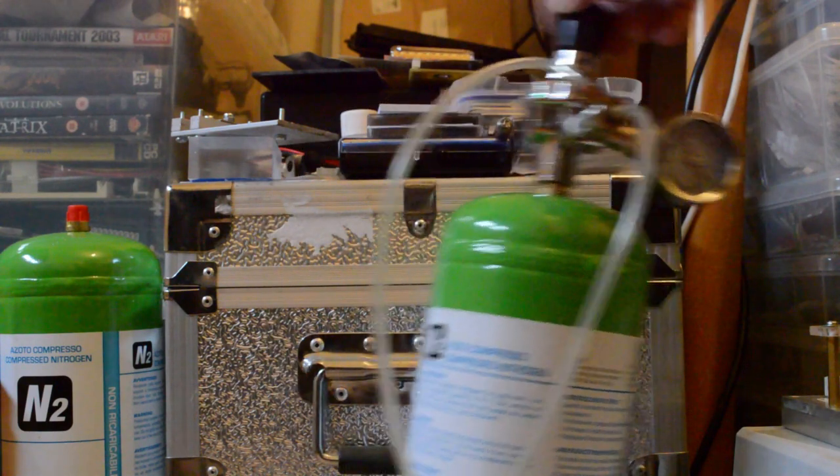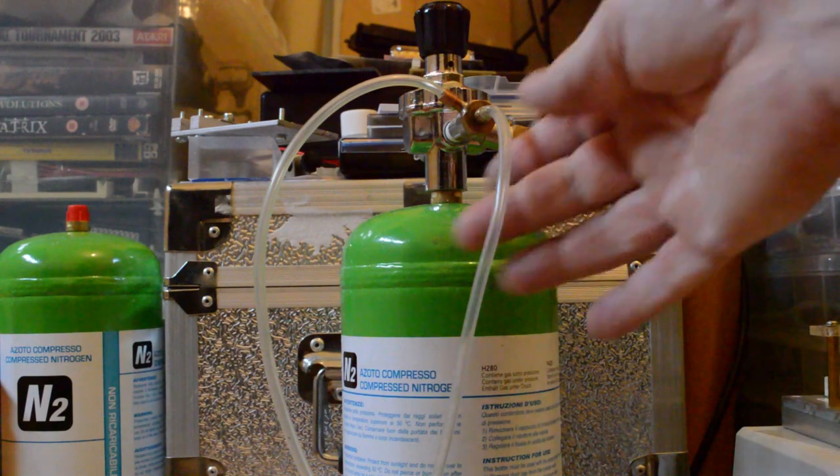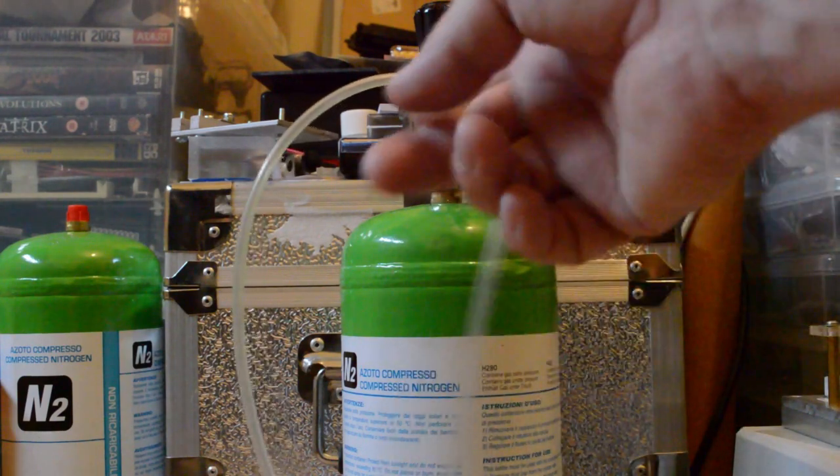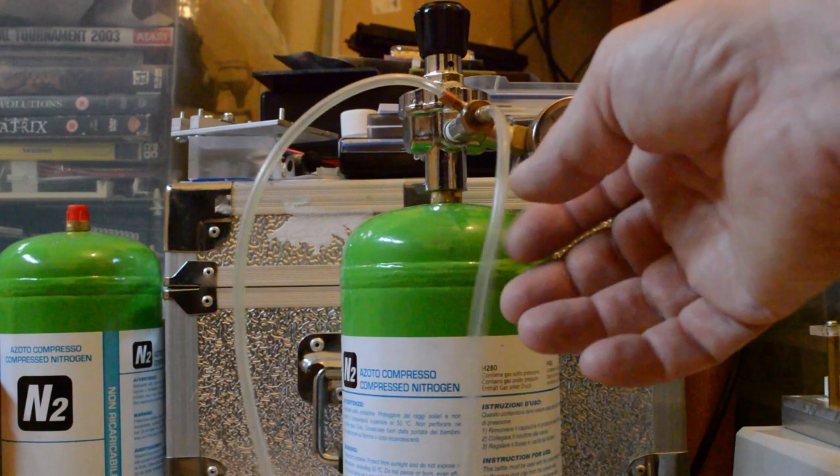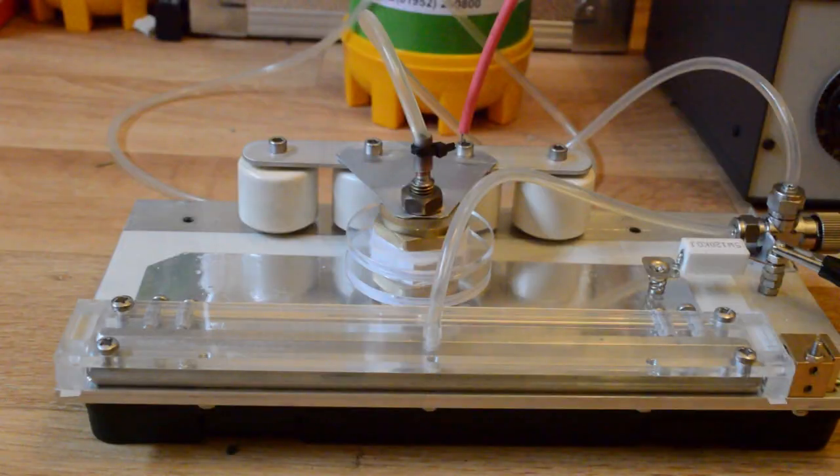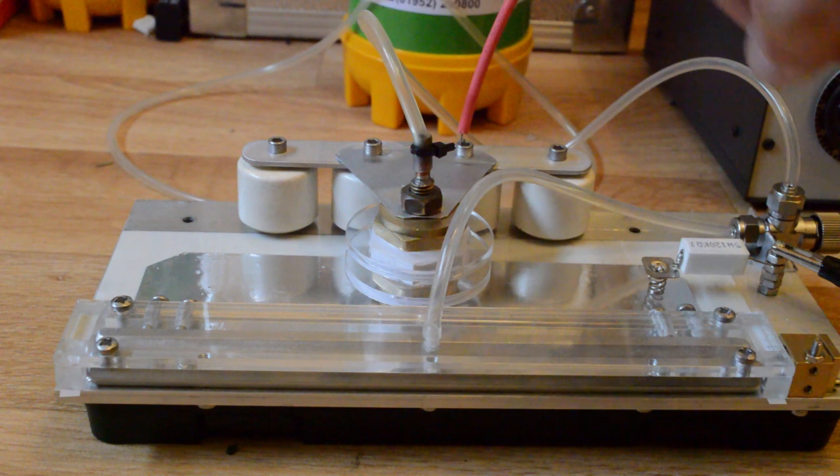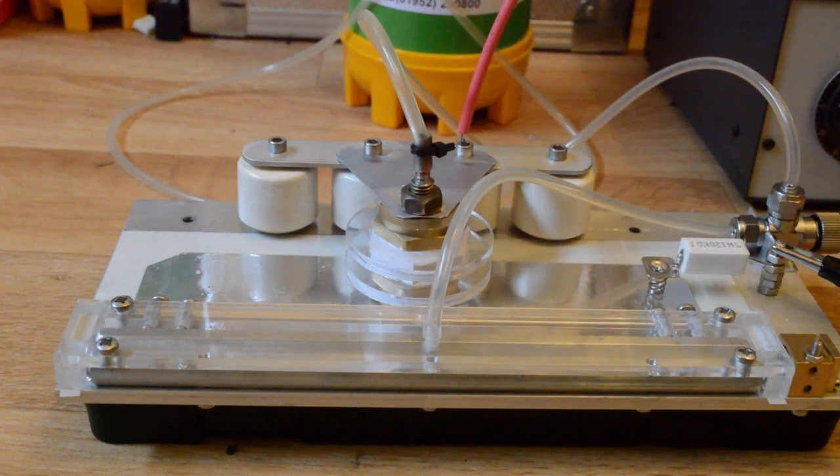Over here we have a supply of nitrogen - just a small welding bottle of nitrogen. I've built a small manifold for it so that we can feed the spark gap and the laser channel itself independently. I've got a small pressure gauge on there.